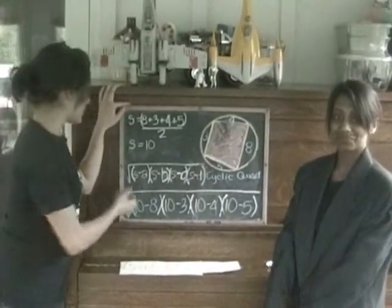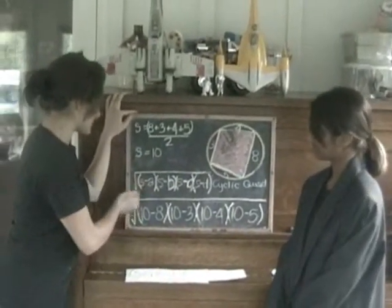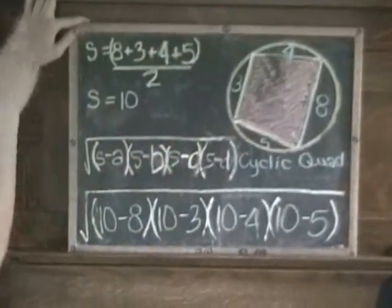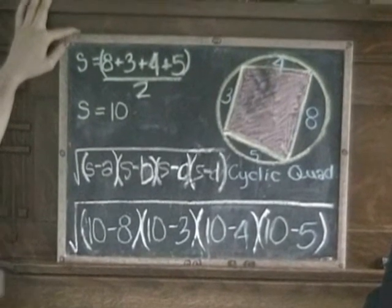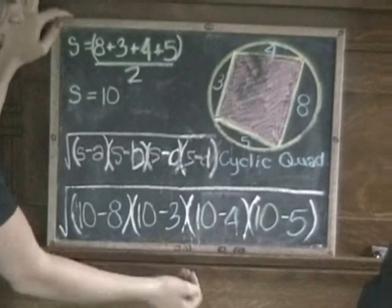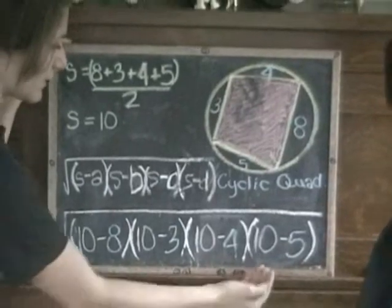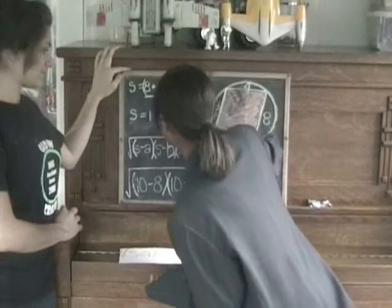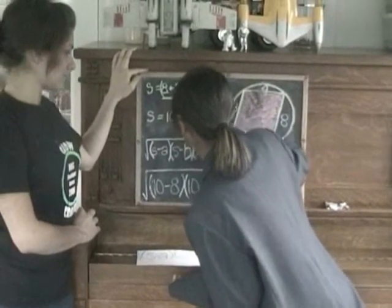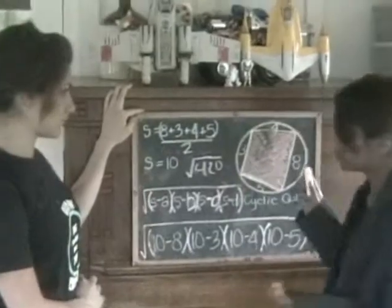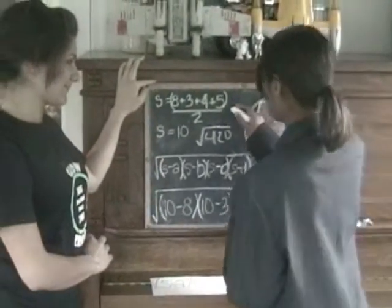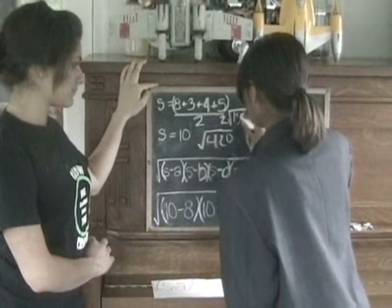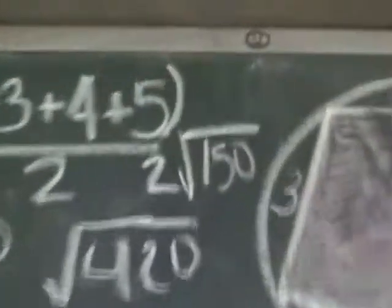Then, you plug in. You take the square root of the semi-perimeter minus each of the sides times each other. For this example, we would get 2 times 7 times 6 times 5. You would get the answer of root 420, which simplifies into 2 root 105. And that would be our answer.